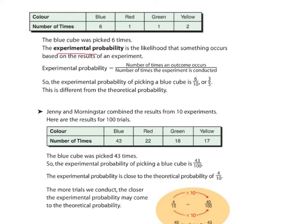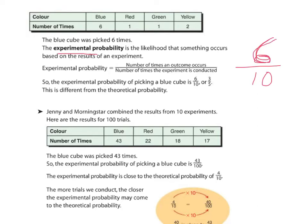So in the experiment, what happened? The experimental probability is the number of times the outcome occurs over the number of times the experiment was conducted. Blue was picked six times out of ten trials, so our experimental probability is six out of ten, or the equivalent fraction three-fifths. Six-tenths is our experimental probability for blue.